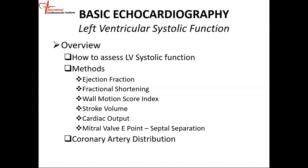Another method is fractional shortening. The fractional shortening is not a volumetric measure — ejection fraction is volumetric whereas fractional shortening is a linear measurement. You measure the length of diastole and the length of systole, subtract systole from diastole, divide by diastole, and you get fractional shortening. It is not as accurate as ejection fraction. We'll also go into wall motion and wall motion score index.